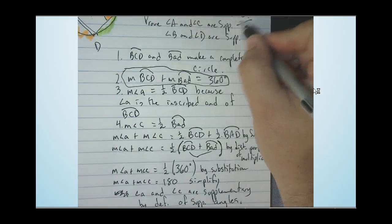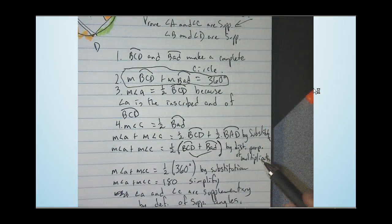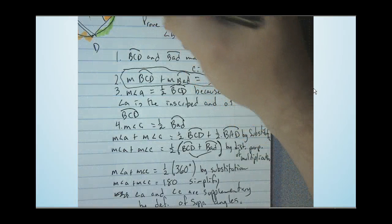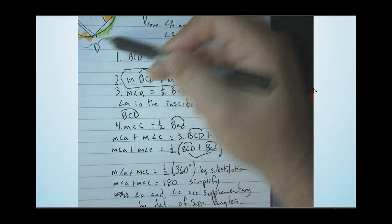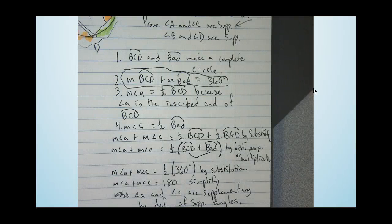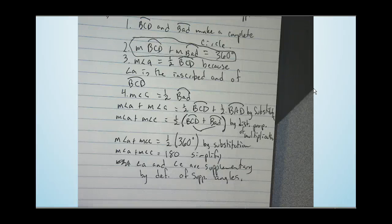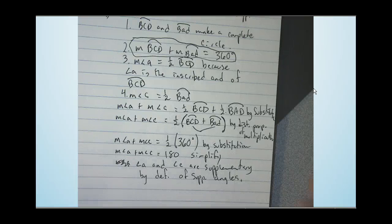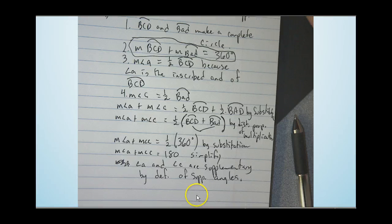We could use the exact same logic to prove that angles B and D are supplementary as well. But this suffices for our proof. We've proven that the opposite angles of a quadrilateral inscribed in a circle are supplementary — which we already observed empirically. Sorry about the commotion from my picture frame falling!